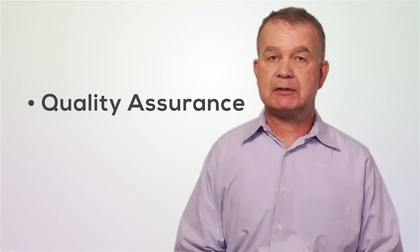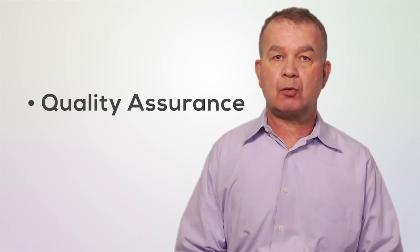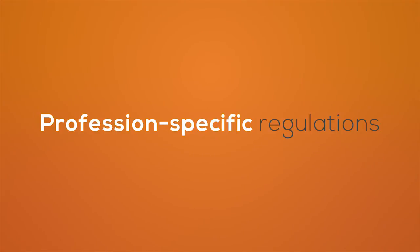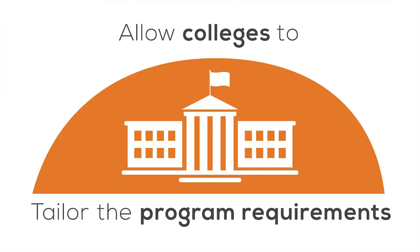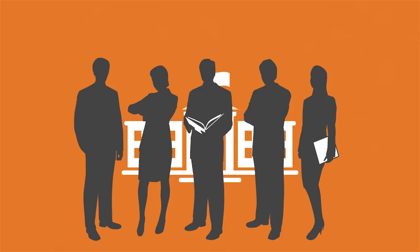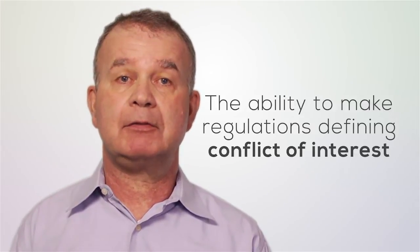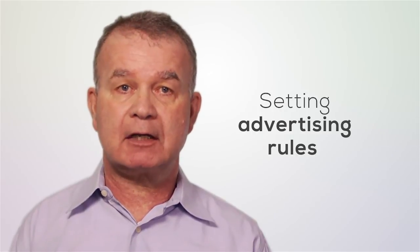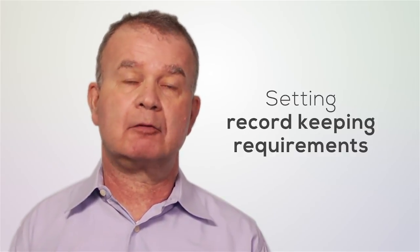Quality assurance regulations give colleges the authority to undertake quality assurance programs required by the RHPA model. Profession-specific regulations allow colleges to tailor the program requirements to the profession in keeping with the minimum requirements of the model and also allow colleges the authority to require their members to meet these specific obligations. Other important regulation-making authorities include the ability to make regulations defining conflict of interest, setting out advertising rules, and setting out record-keeping requirements.